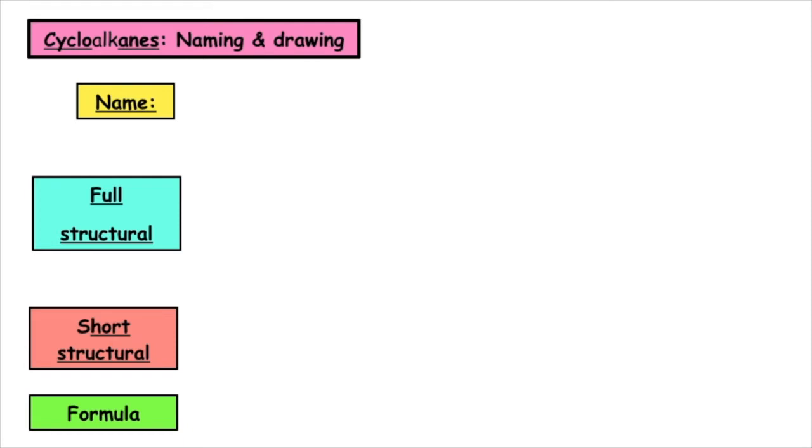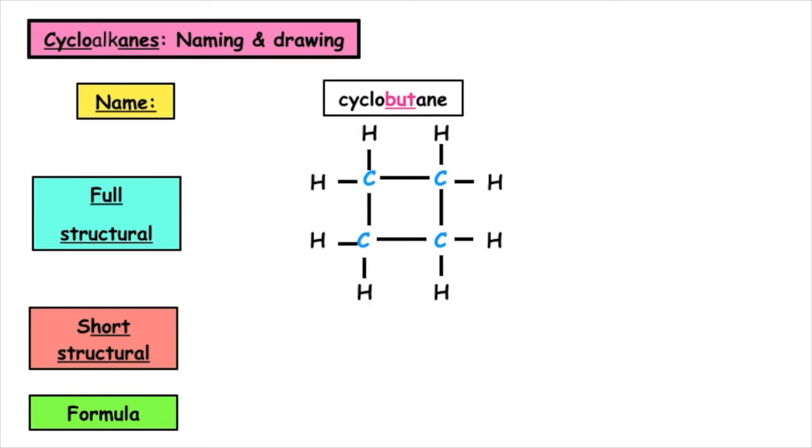The next member is the cyclobutane. We draw four carbons joined together in a ring and we make sure that each carbon atom has four lines or four bonds coming out of it. We fill them out with hydrogens.